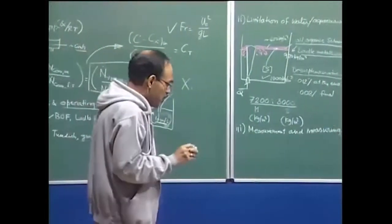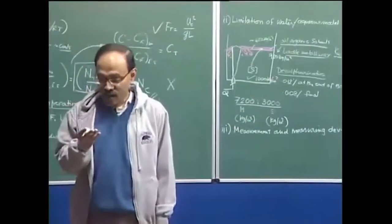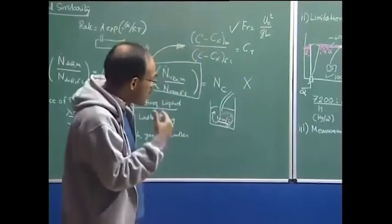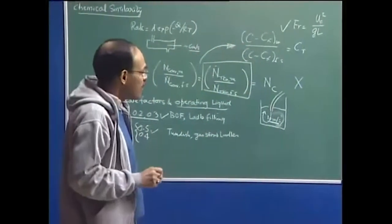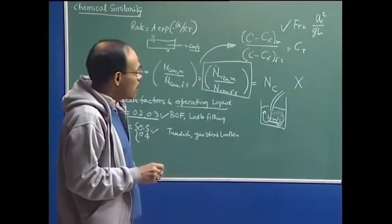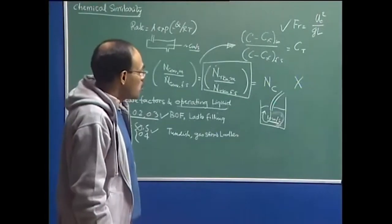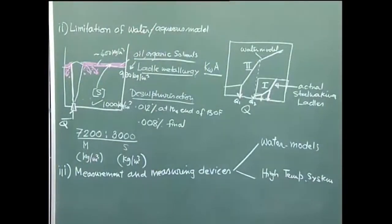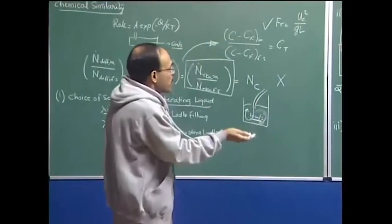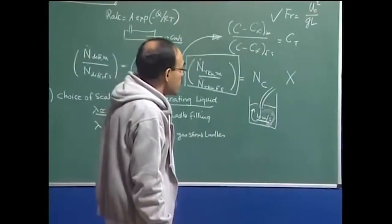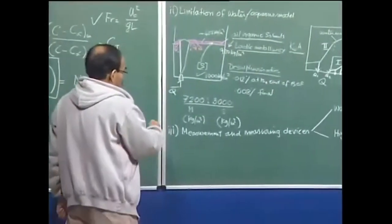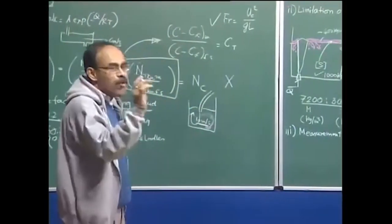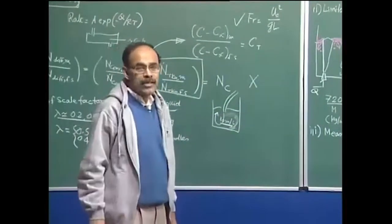Measurement in a steel plant on a sustained basis is very, very difficult because probes capable of performing at high temperature on a sustainable basis are not readily available and can be very expensive. In physical model studies, we can carry out various types of measurements. The most important kind is the observation of the flow pattern, or flow visualization.